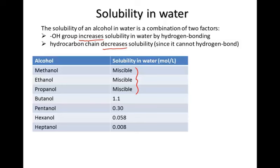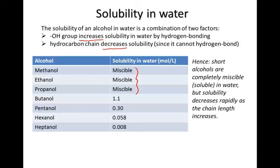However, once we get up to butanol with a four-carbon chain, the effect of that nonpolar carbon chain begins to dominate, and the solubility decreases pretty quickly. You can see that butanol has a solubility of 1.1 moles per litre. Adding an extra carbon to get to pentanol, it decreases down to 0.3 moles per litre, and so on.